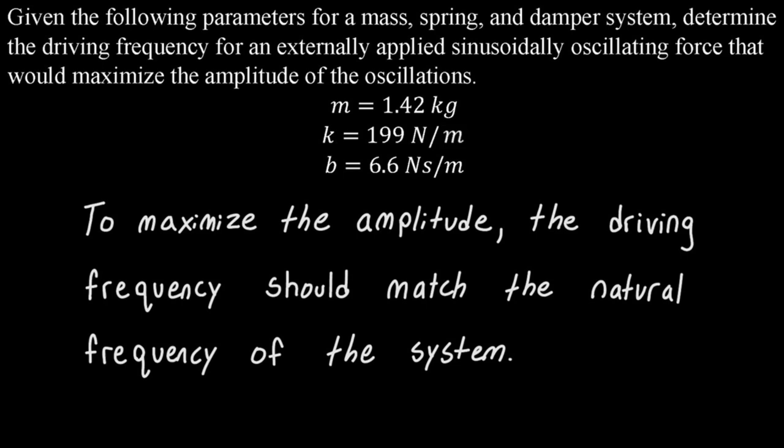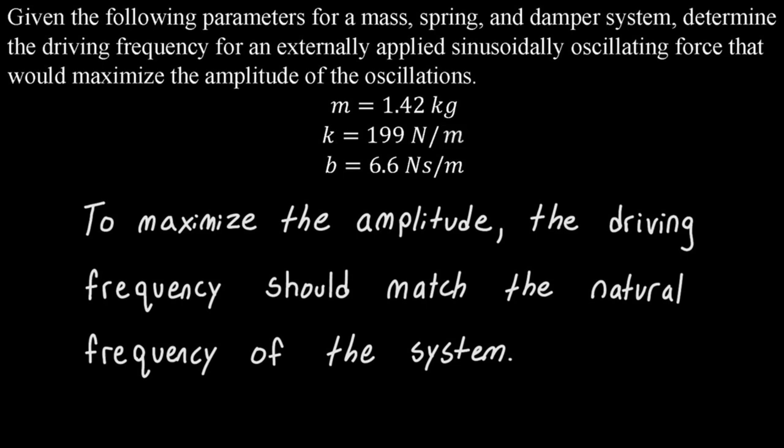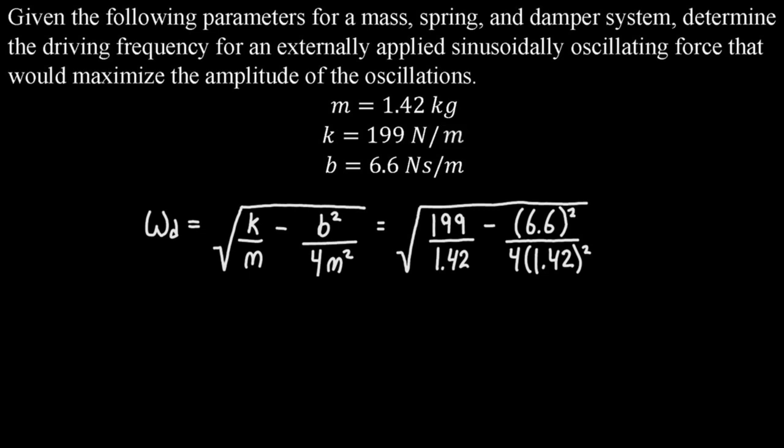We know that to maximize the amplitude the driving frequency should match the natural frequency of the system. So we use the equation for the damped angular frequency: the square root of k over m minus b squared over 4m squared. That gives us the square root of 199 over 1.42 minus 6.6 squared over 4 times 1.42 squared, which tells us our natural frequency is 11.608 radians per second.